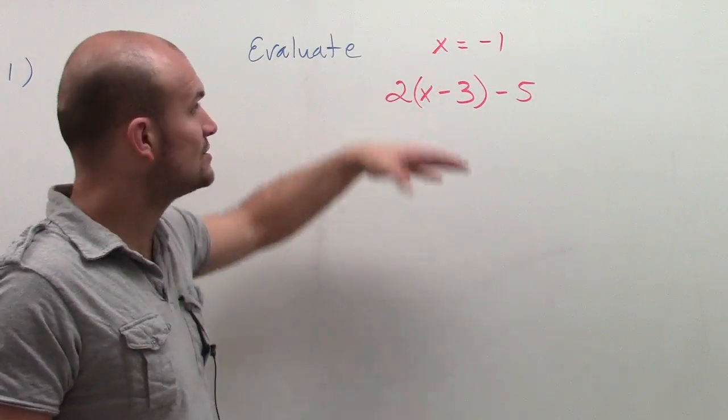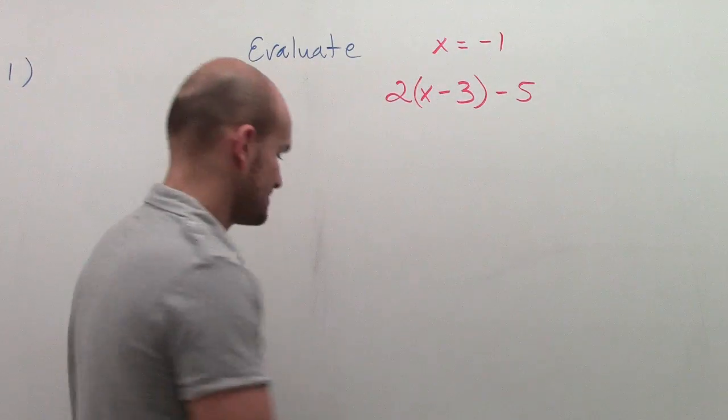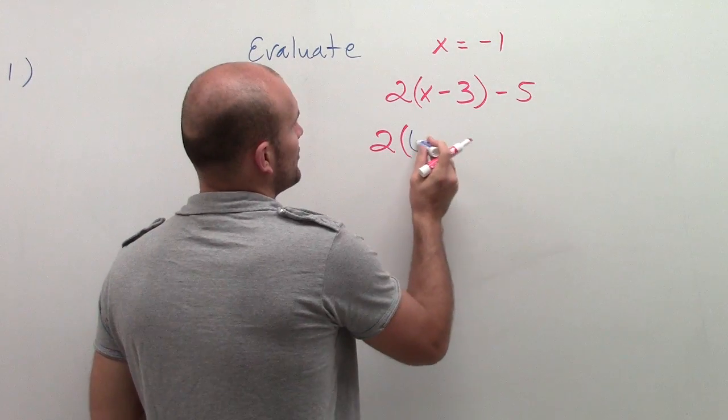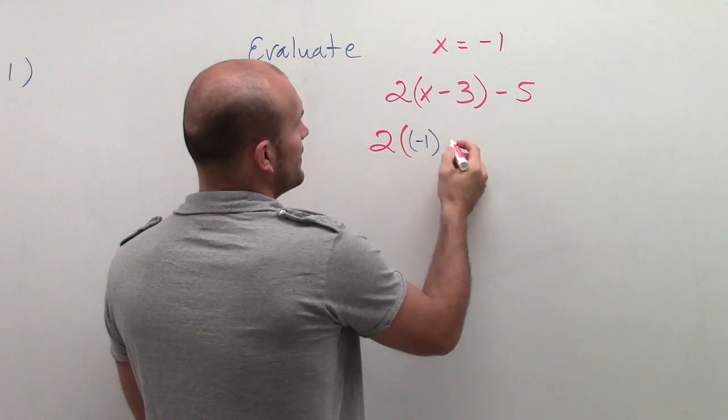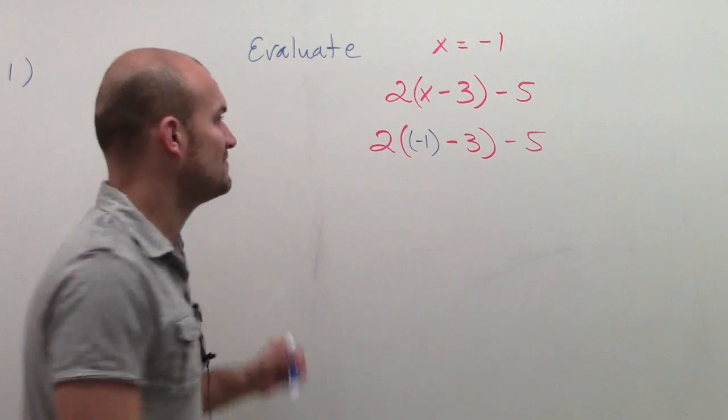So to do that, all I'm going to do now is plug in the value of negative 1 in for x. So I'm going to rewrite everything, but now I'm going to plug in negative 1 for the x. And then I'll just go ahead and evaluate.